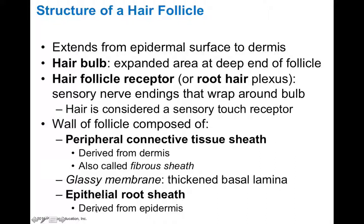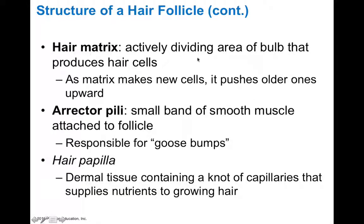The epithelial root sheath is derived from the epidermis because it's made of stratified squamous epithelium. The hair matrix is the actively dividing area of the bulb that produces new hair cells; as these cells divide, they push upward and incorporate into the growing hair. The hair follicle also has an erector pili muscle attached, which is a smooth muscle involved with goosebumps. The hair papilla is an extension of dermal tissue into the bulb, and it supplies nutrients to the growing hair and specifically to the hair matrix.